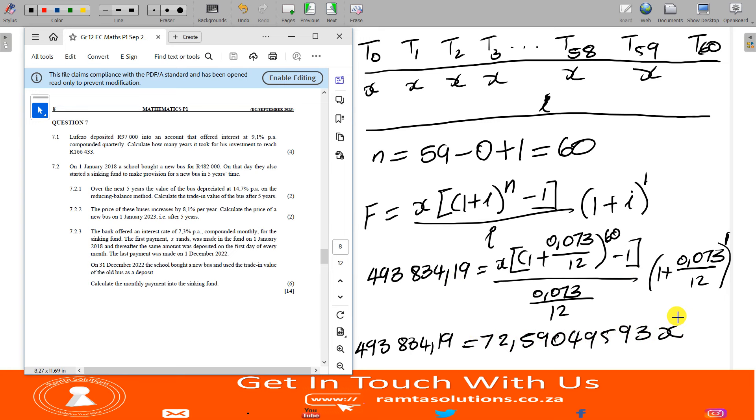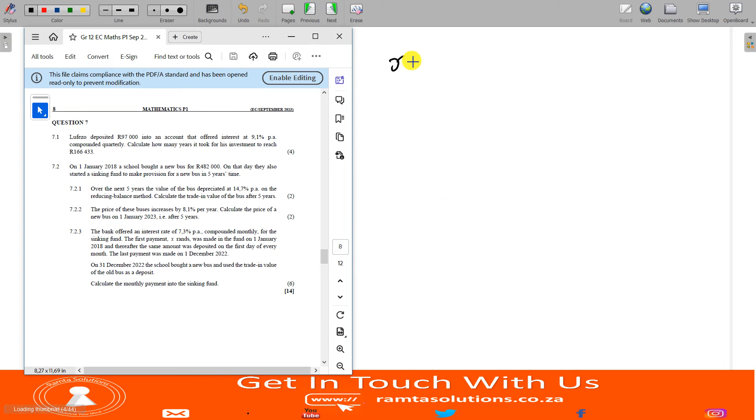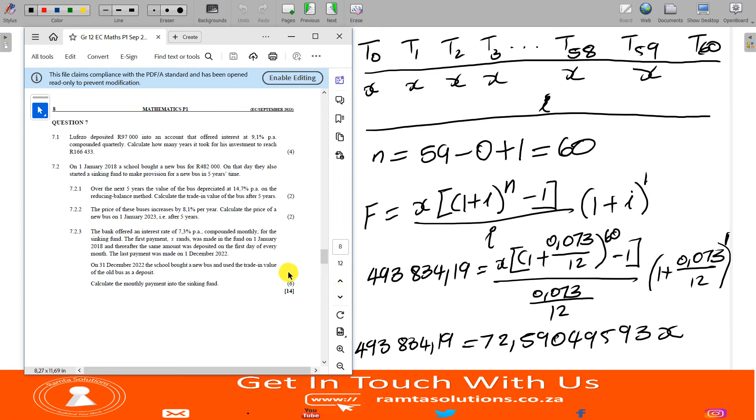493,834.19 divided by 72.590495. I got 6,803 rands and 1 cent. So the monthly installment is 6,803 rands and 1 cent. In this question the game changer is realizing that the last payment was made on December 1 and the account closed on December 31. This is what will give you all your marks, realizing that the last payment was made on December 1.